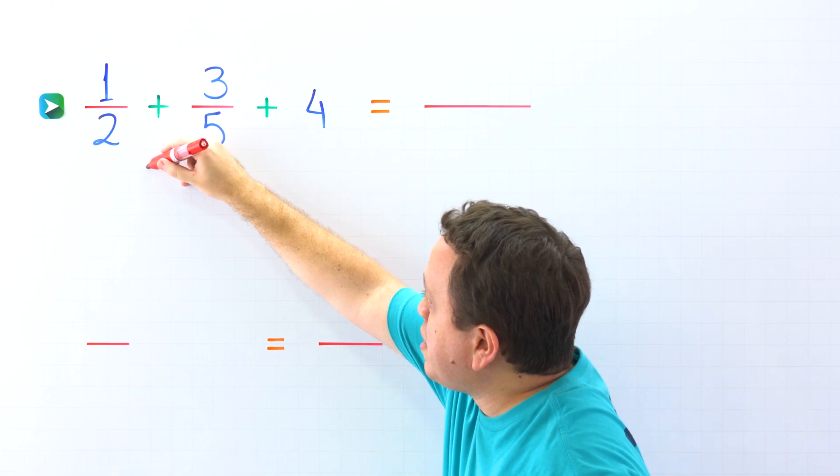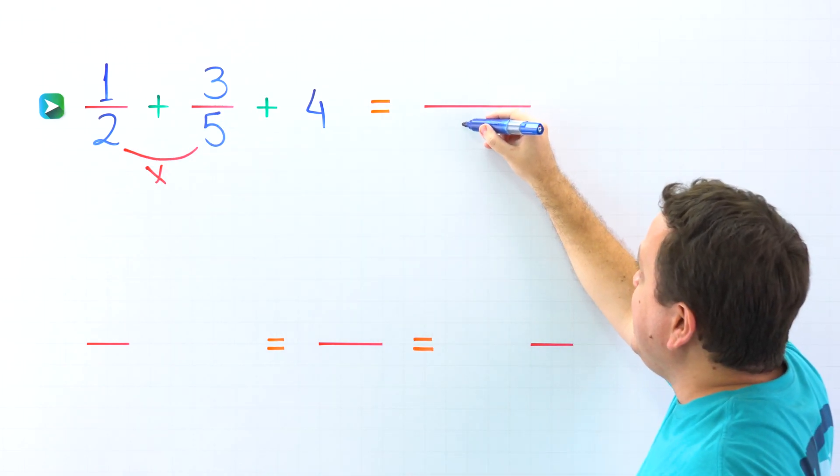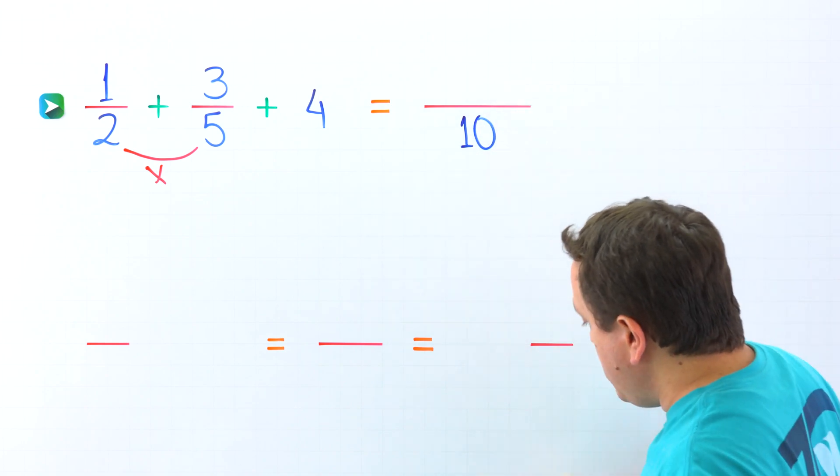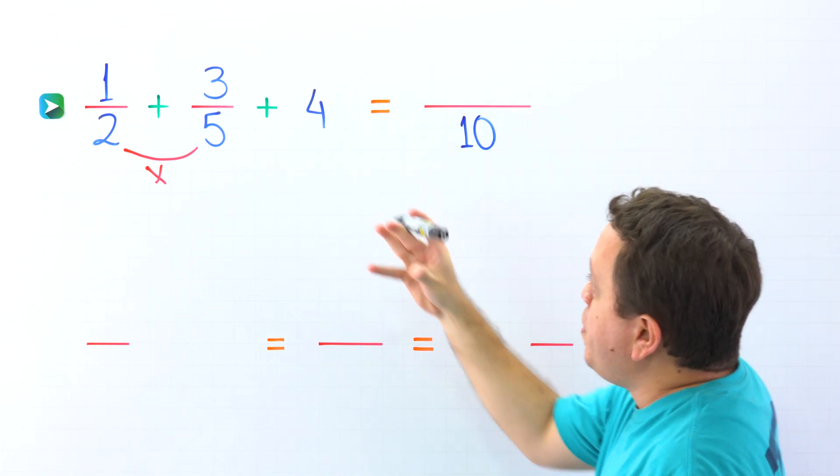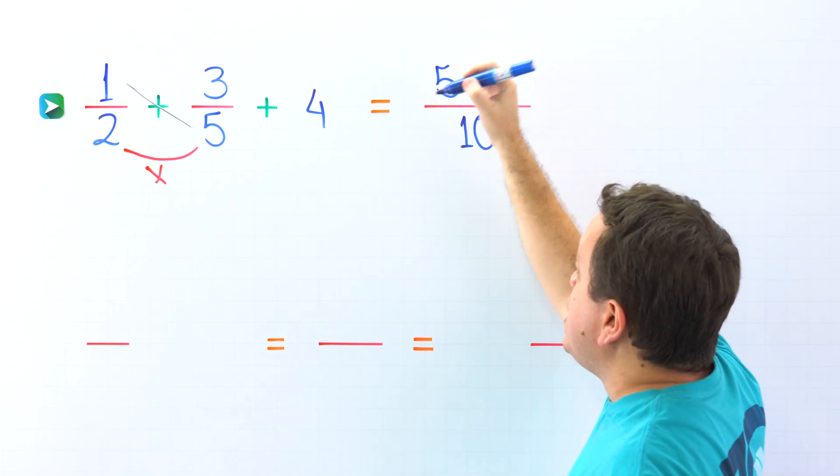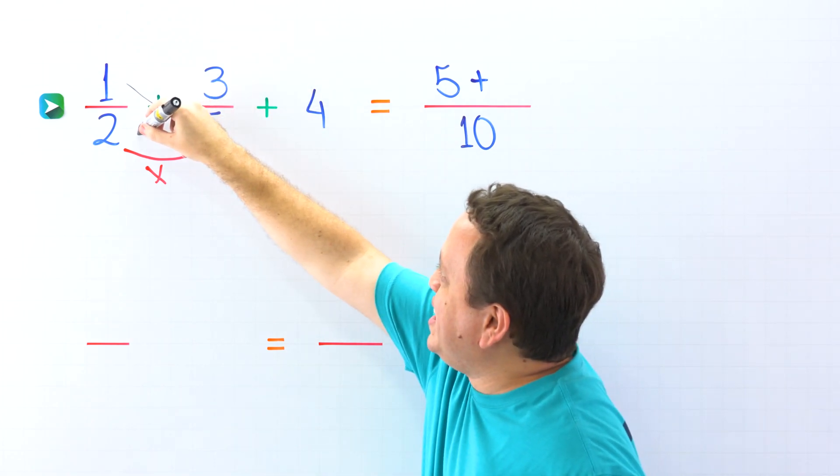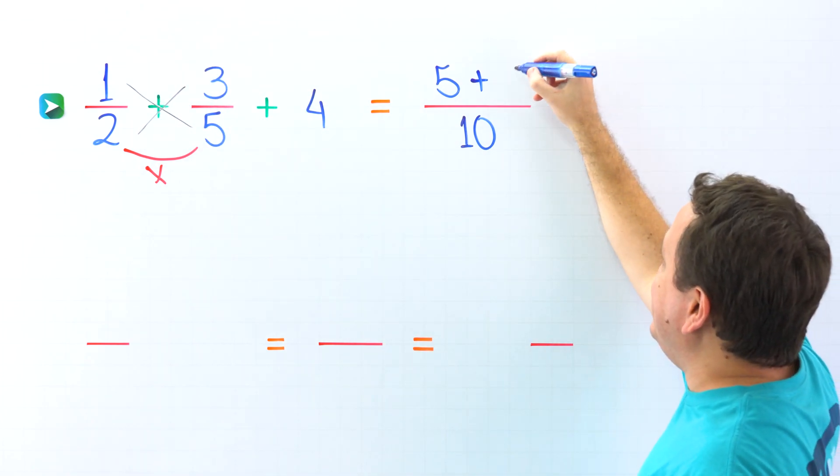In this method, we'll start by multiplying the denominators. And 2 times 5 is 10. Then we're going to cross-multiply. Over here, 1 times 5 is 5. Perfect. Next, we have the plus sign. On the other side comes 2 times 3. 2 times 3 is 6.